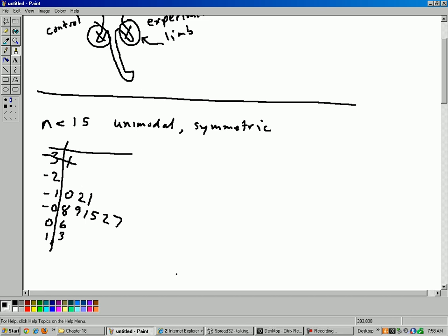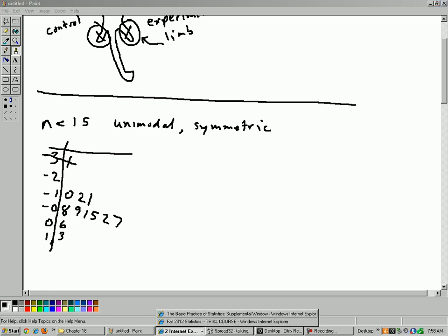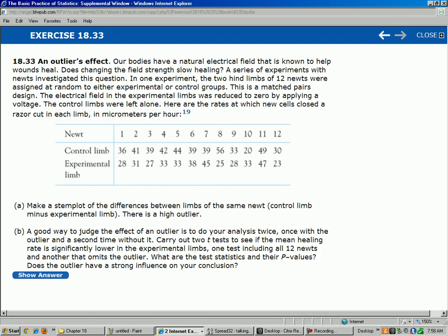And so, in the problem here, it says to do this twice. Once with the outlier and once without the outlier. Let's go back to the original question. Part A, it says make a stem plot. We did that. And there's an outlier, yeah, the negative 31.